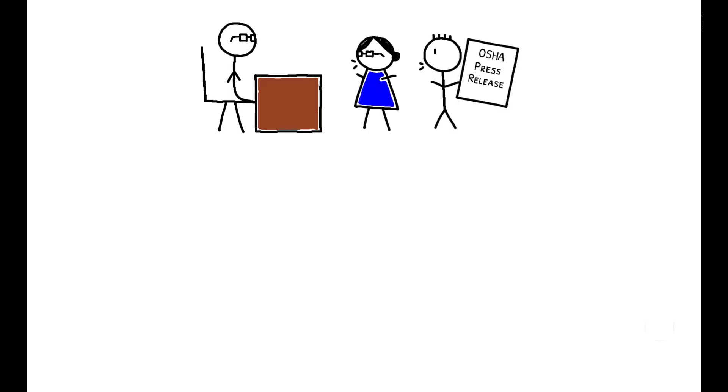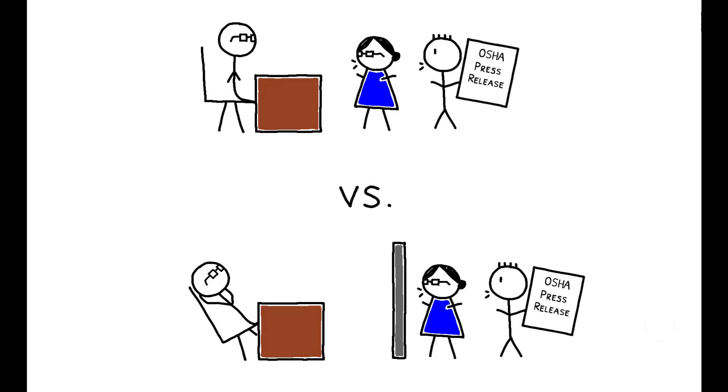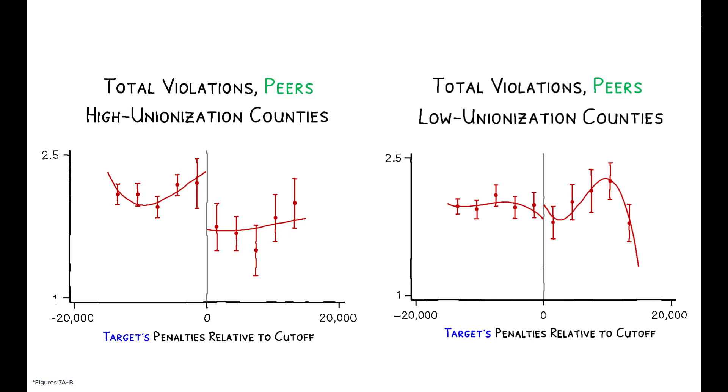Facilities should be more sensitive to the threat of negative publicity when workers are more empowered to make demands. The author tests this idea by examining whether the effectiveness of press releases depends on the strength of local labor unions. And indeed, when the sample is split between counties with above and below median unionization rates, press releases are only effective at reducing non-compliance in high unionization areas.